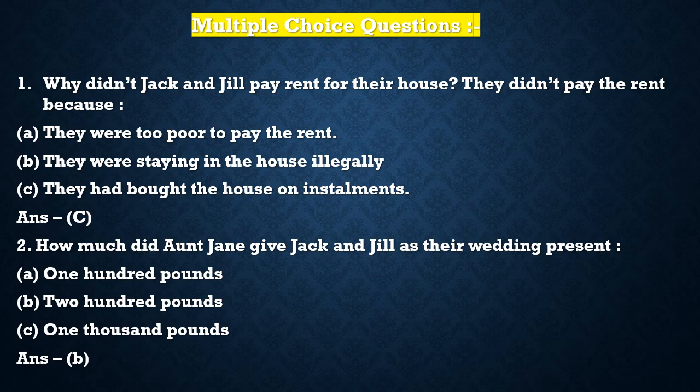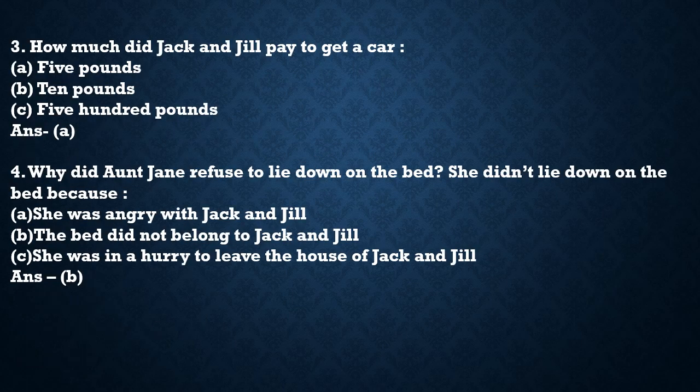Question 2: How much did Aunt Jen give Jack and Jill as their wedding present? Three options: one hundred pounds, two hundred pounds, one thousand pounds. The correct answer is two hundred pounds — unhone tauffe mein diya tha. Question 3: How much did Jack and Jill pay to get a car? Options: five pounds, ten pounds, five hundred pounds. The correct answer is A — five pounds — unlog har mahine five pounds pay karte the.